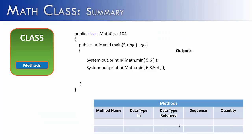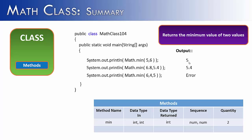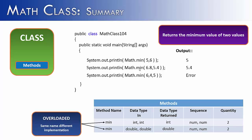Max's counterpart is min, which returns the minimum value of two values. Given 5 and 6, it returns 5. The name is min, data type in is integer integer, return type is int — notice no decimal. Sequence is two numbers and order doesn't matter, quantity is 2. Just like max, min does not allow more than two values. The second line shows the overloaded version: instead of two integers, it takes in two doubles and returns a double. These are two separate overloaded methods — same name, implemented differently.